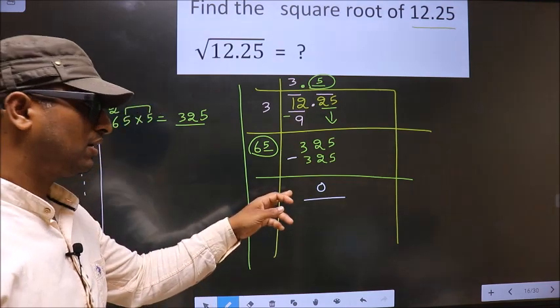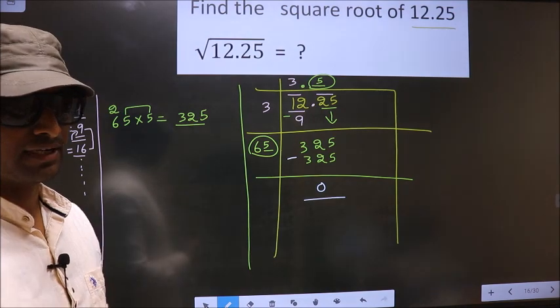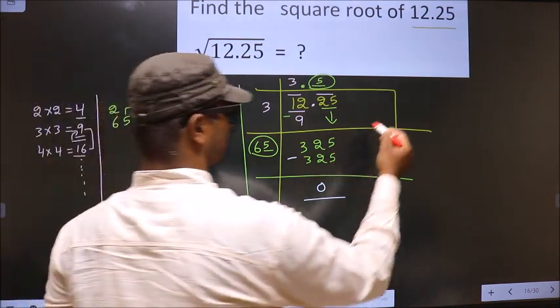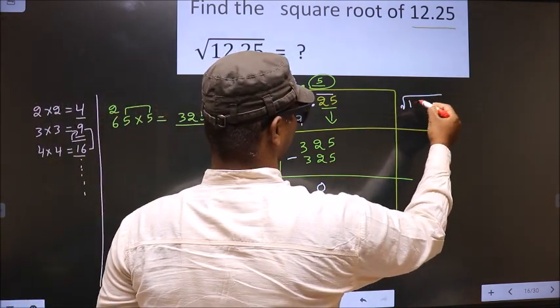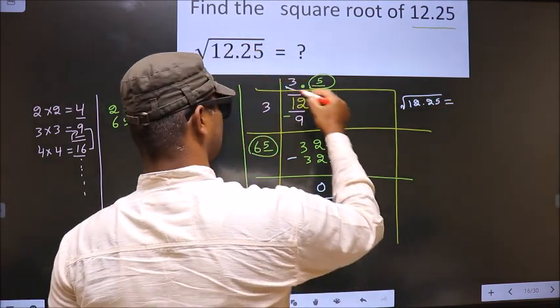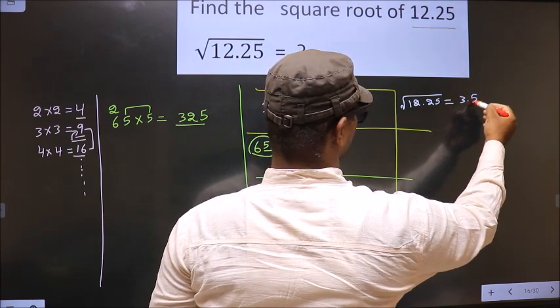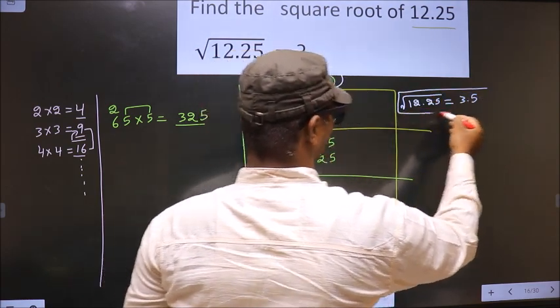We got 0 here. That means given number is a perfect square. And the square root of 12.25 is this number. That is 3.5. So this is our answer.